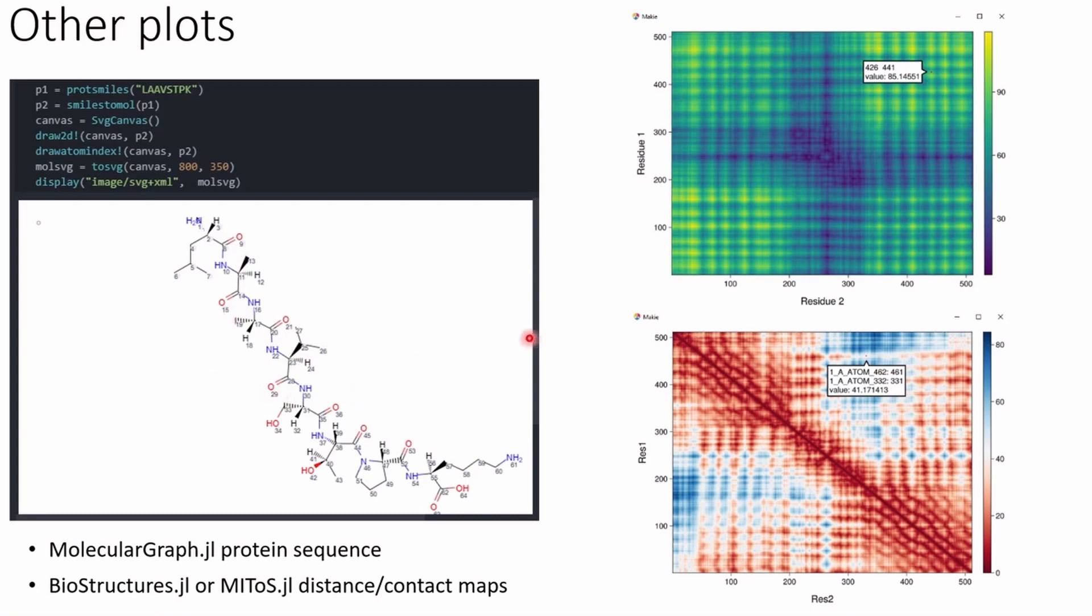On the right are some heat maps that can be made from distance and contact maps from BioStructures or MITOS. And the data inspector tooltips are enabled for these as well. They're different because the top plot is from BioStructures data and the bottom plot is from MITOS data, so the data being inspected is different.